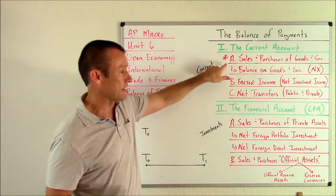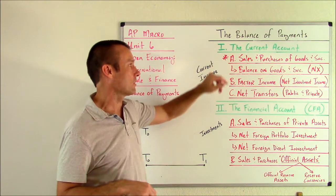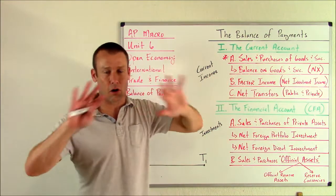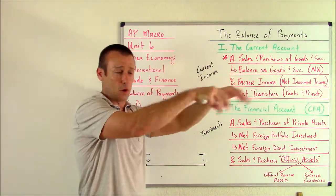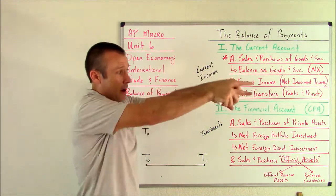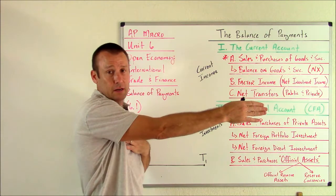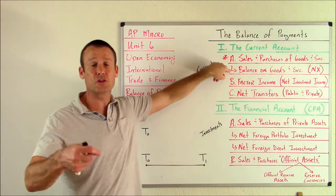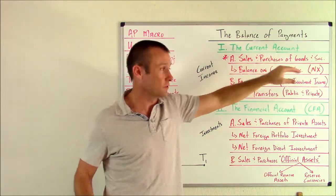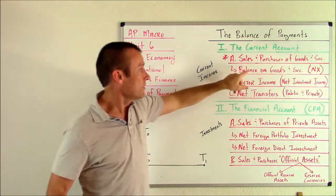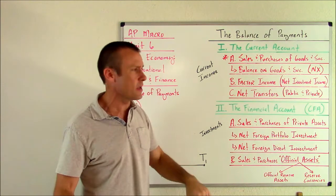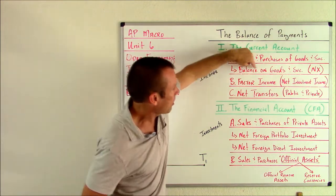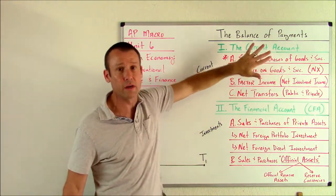Sub-account A has an asterisk — it's the most important sub-account of the current account. It covers sales and purchases of goods and services. This is net exports. If the United States sells an export, money comes in — that's current income to us. If we go buy an import, money's going out and we're providing current income to somebody else. Some textbooks call this the 'balance on goods and services' — same thing. All of this is just net exports being recorded here.